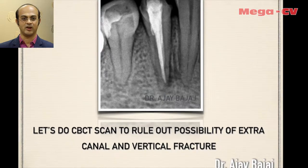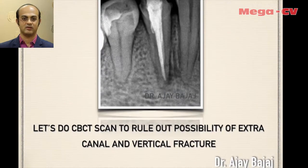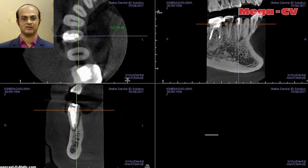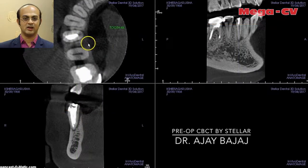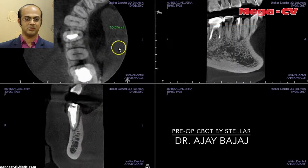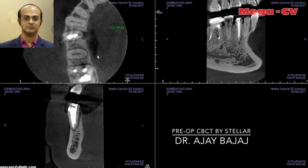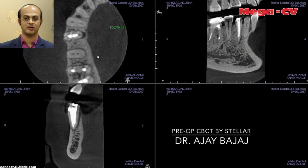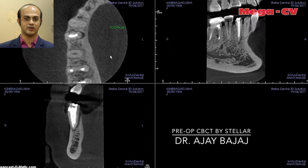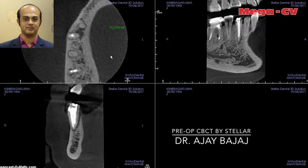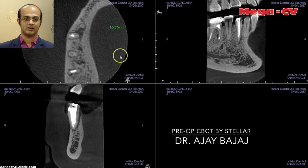In the CBCT you can see some voids and spaces. We decided to treat this case. In the longitudinal section you can clearly see the periapical lesion, and the voids from poor lateral condensation are clearly visible.